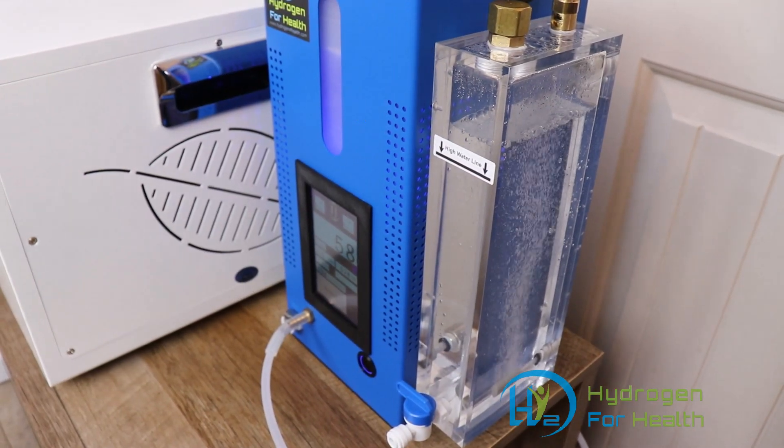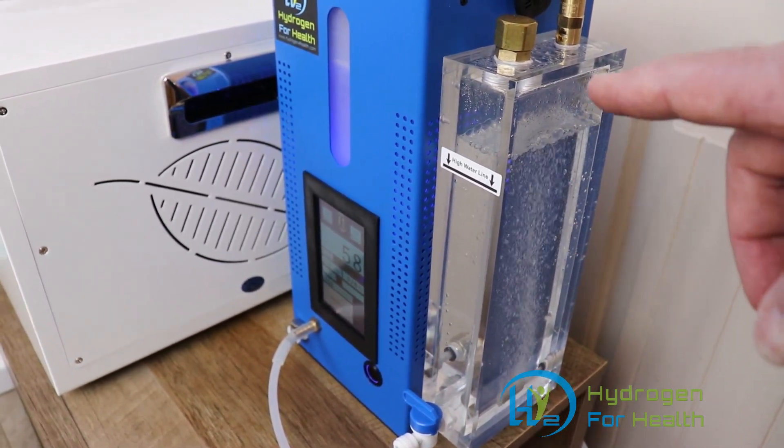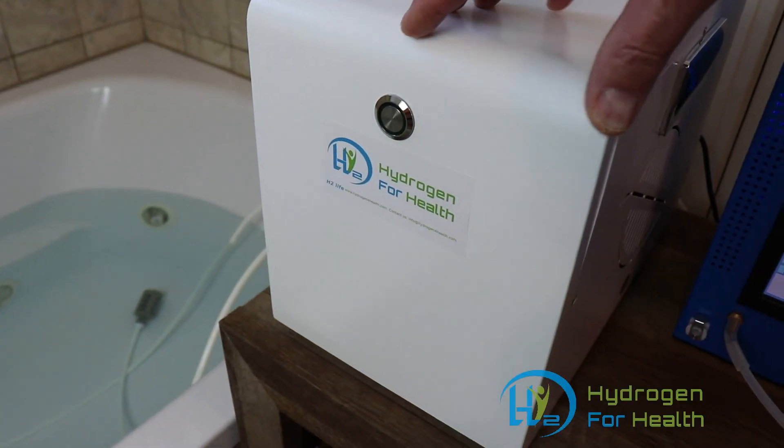As you can see right now the Browns gas machine is generating hydrogen and oxygen and we're going to go ahead and start the generator.